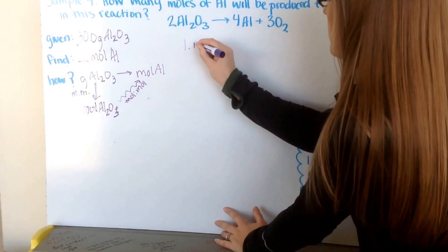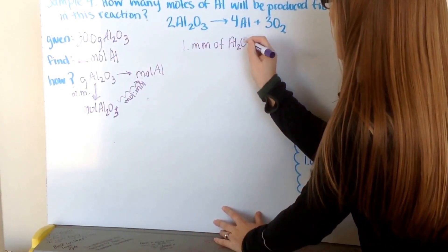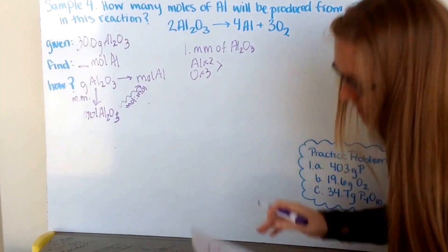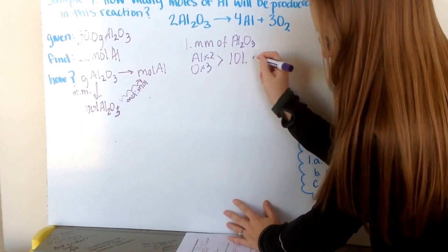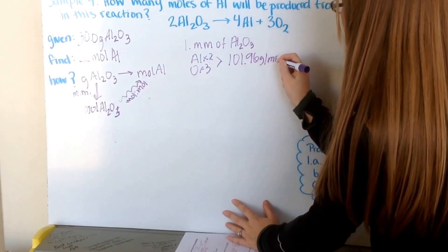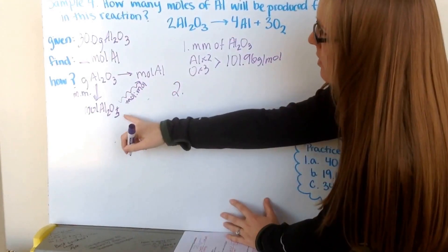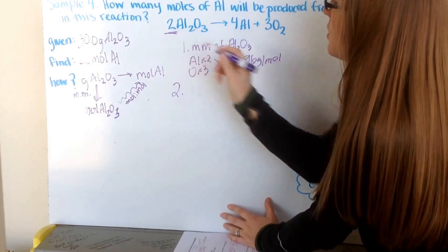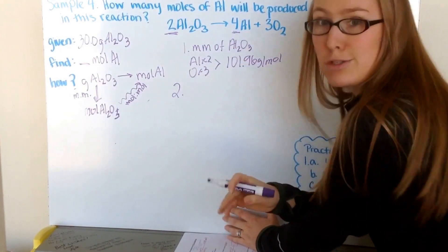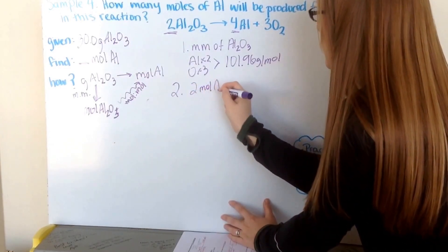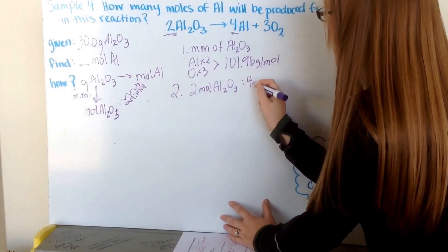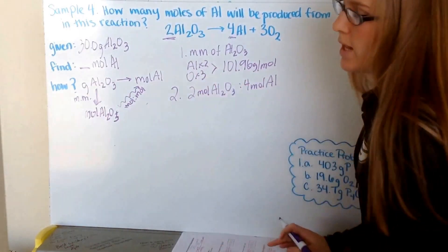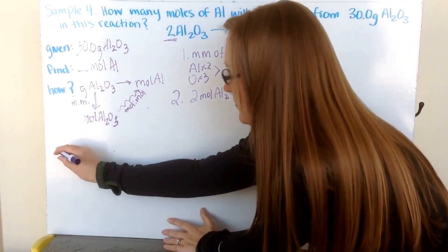First I figure out the molar mass of aluminum oxide: 2 aluminums and 3 oxygens gives a molar mass of 101.96 grams per mole. Then I determine my mole-to-mole ratio of aluminum oxide to aluminum from the balanced equation: 2 moles of Al₂O₃ for every 4 moles of aluminum — I don't reduce this ratio. Now that I have both conversion factors, I write out the full equation.